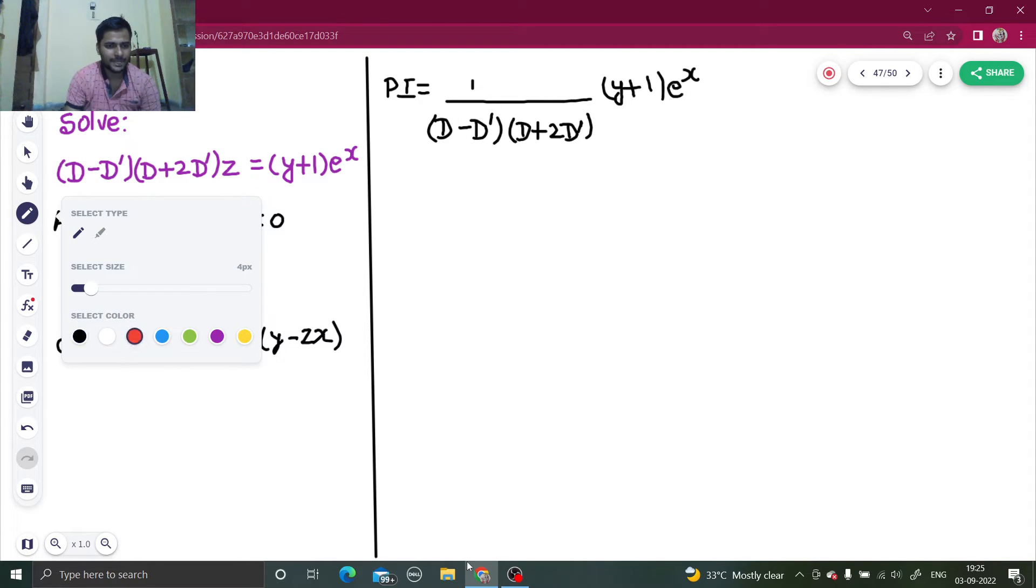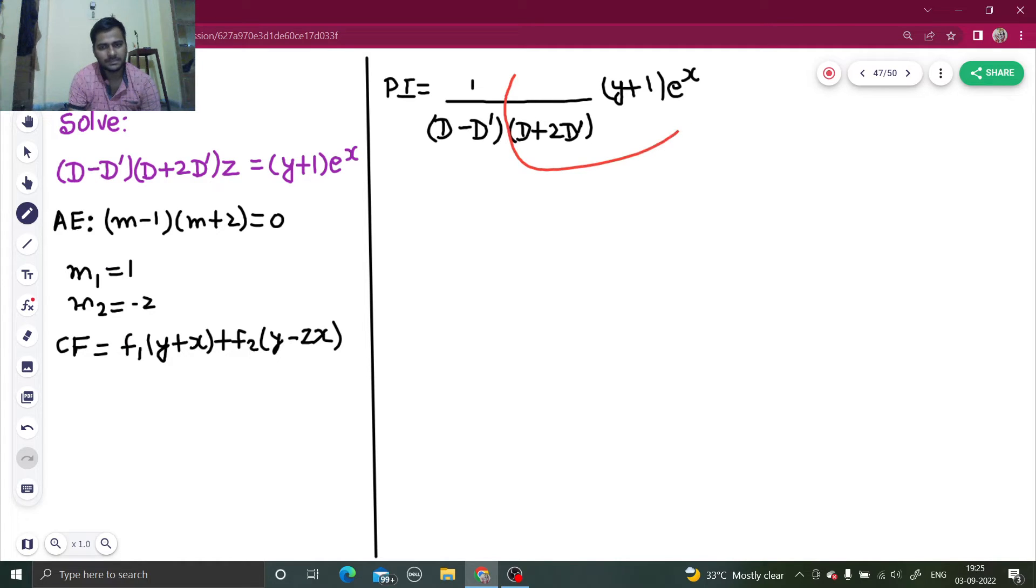What does general method say? It says that pick one factor at a time, that factor will reduce to integral and write y in terms of x. Look at this factor which is d plus 2d dash. Compare it to d minus md dash. From here, you get m as minus 2.